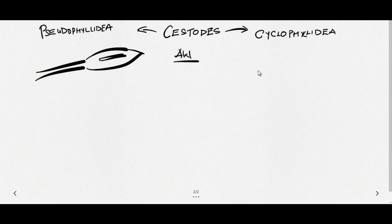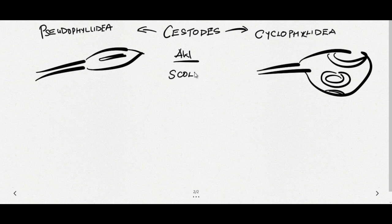This scolex in case of Pseudophyllidean Cestode is spoon-shaped, while in Cyclophyllidean it is more globular. In Pseudophyllidean it has two sucking grooves that are slit-like. While in case of Cyclophyllidean, you can have four muscular suckers. I have drawn here three, but actually one is on the back side because I cannot draw 3D diagrams. But the basic difference is you have two slit-like grooves in case of Pseudophyllidean and four muscular suckers in case of Cyclophyllidean.